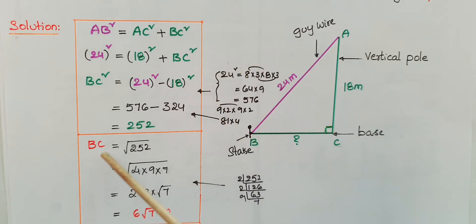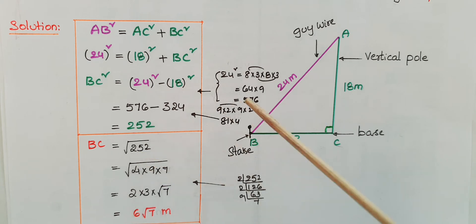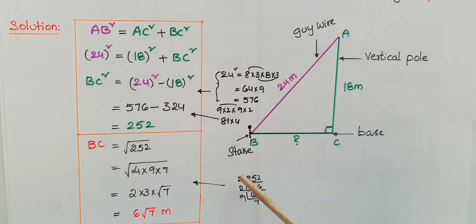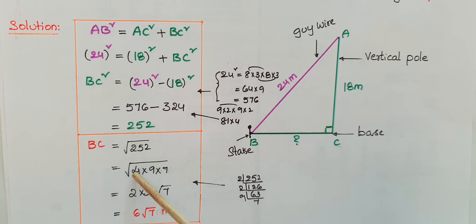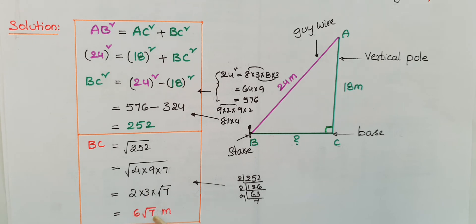Therefore BC = √252. Finding prime factors of 252 gives 4 × 9 × 7. So √252 = √4 × √9 × √7 = 2 × 3 × √7 = 6√7 meters. The BC value is 6√7 meters.